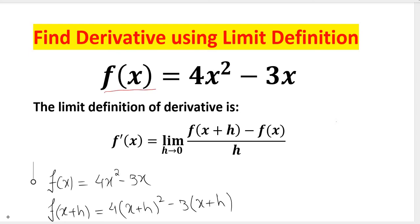We are given a function f(x) equals 4x squared minus 3x, and we know the limit definition for a derivative is f prime of x equals the limit as h approaches 0 of f(x + h) minus f(x) divided by h.